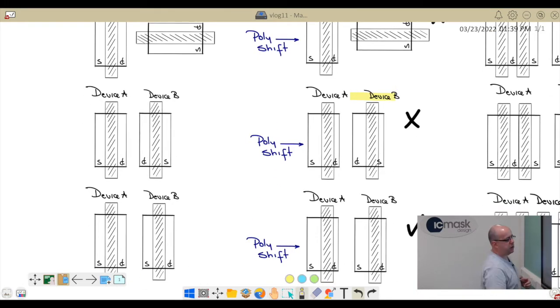However, in this example we can see that we have the source on the left then drain for device B, and drain on the left then source for device A. But if we get a mask shift, device A's source gets bigger and device B's drain gets bigger, and again we don't have matching.